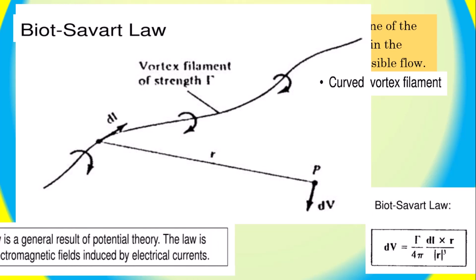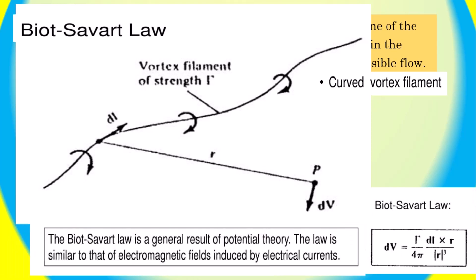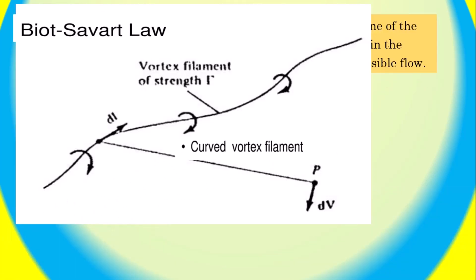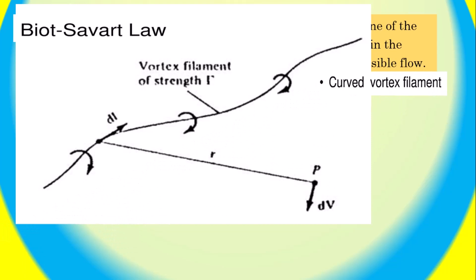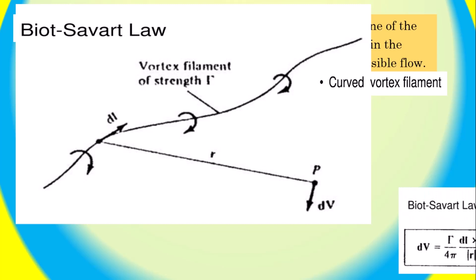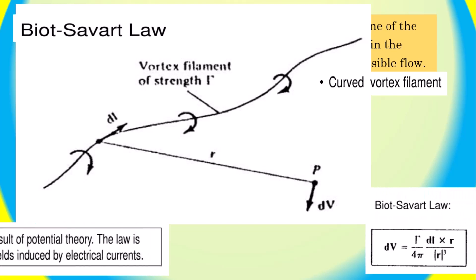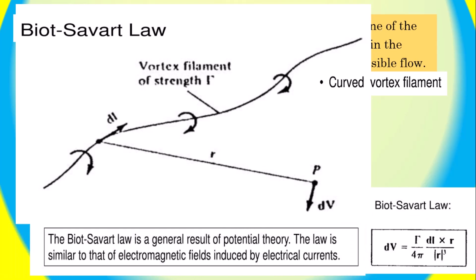The Biot-Savart law is a general result of potential theory. The law is similar to that of the electromagnetic field induced by electrical currents. It can be represented by the following formula: dV equals gamma divided by 4π times dL cross r divided by r cubed.